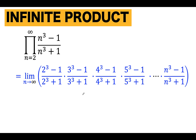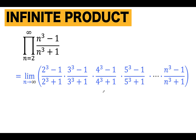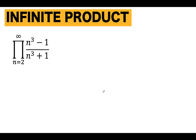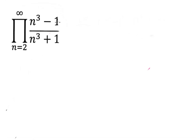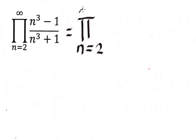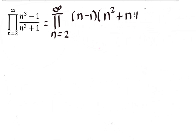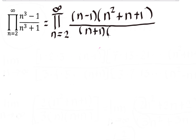You can pause the video and see if you can solve this interesting calculus problem. Now let's solve this together. Let's begin by noting that n cubed minus 1 is a difference of two cubes, which we can factor. The factored form of n cubed minus 1 is (n minus 1)(n squared plus n plus 1), and the factored form of n cubed plus 1, the sum of two cubes, is (n plus 1)(n squared minus n plus 1).